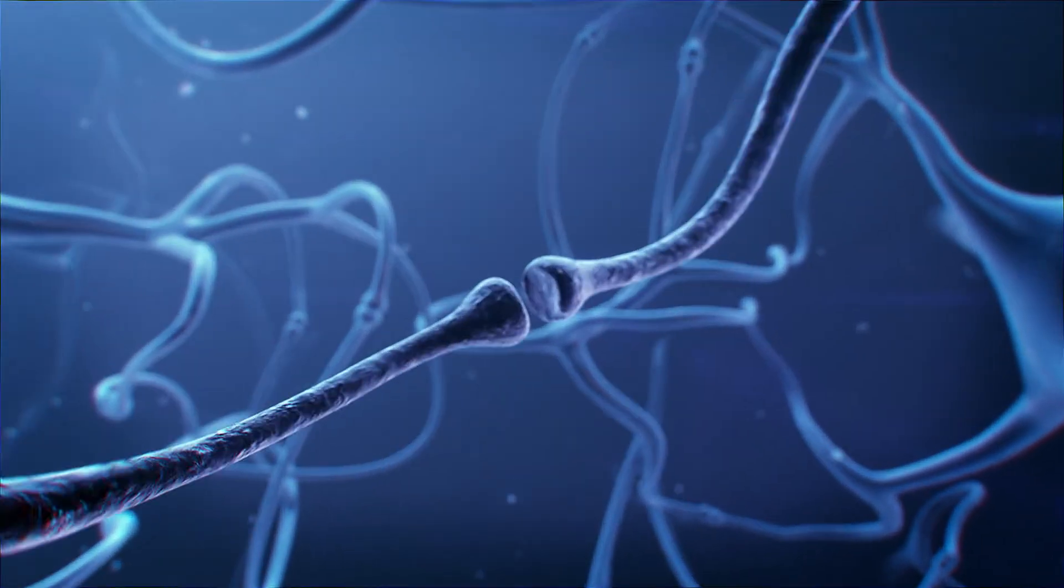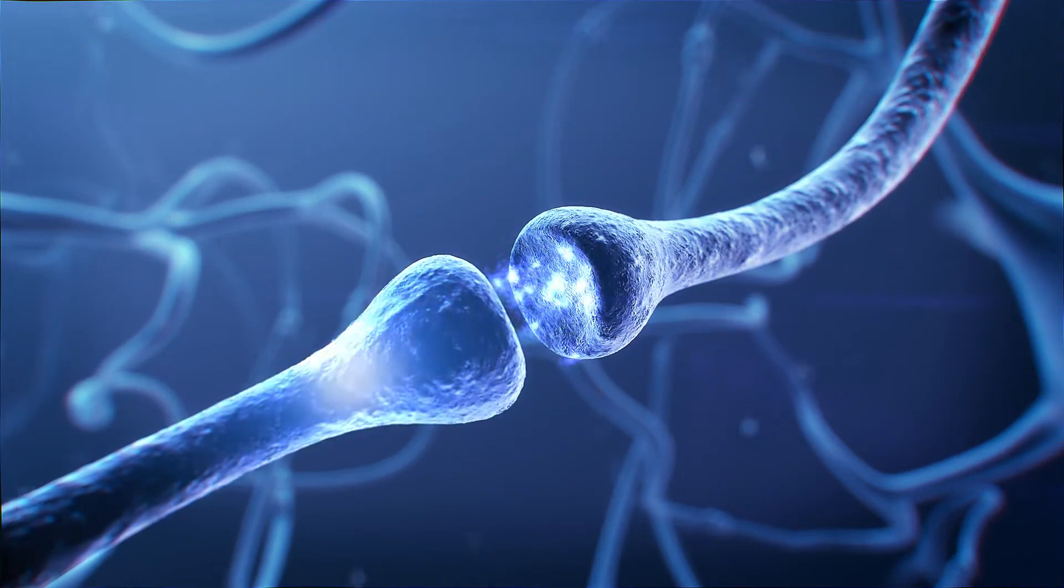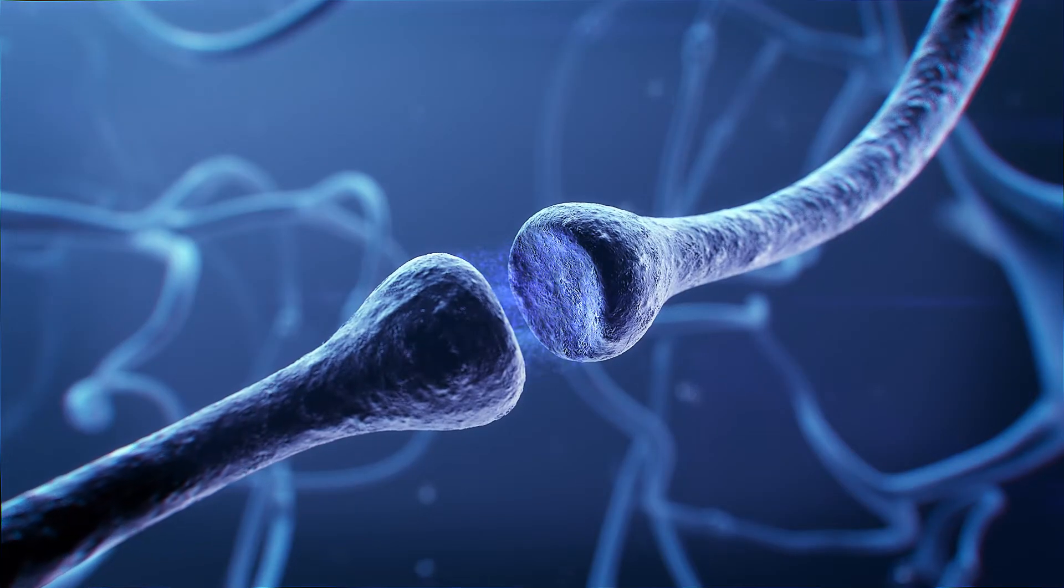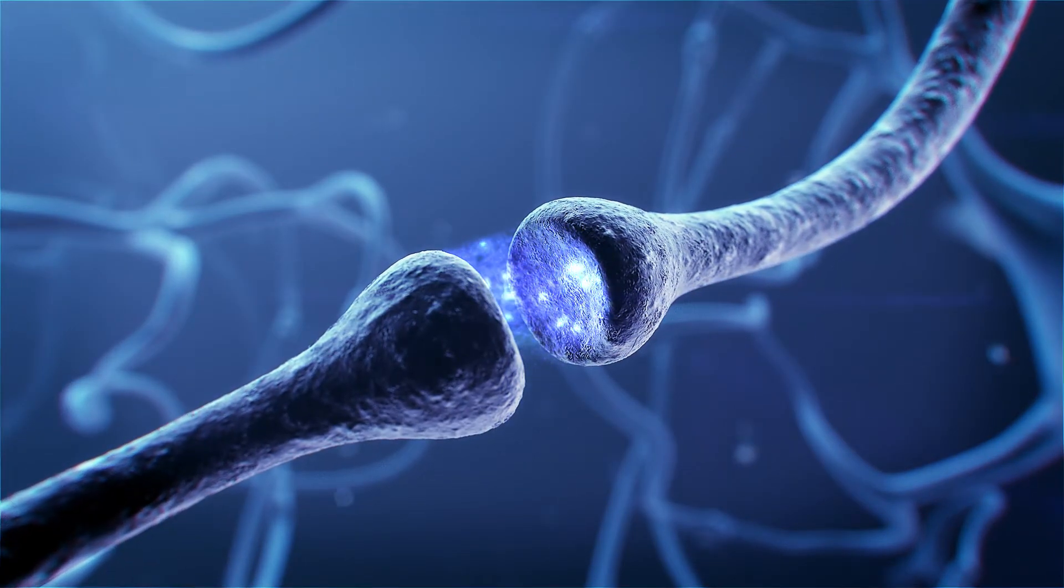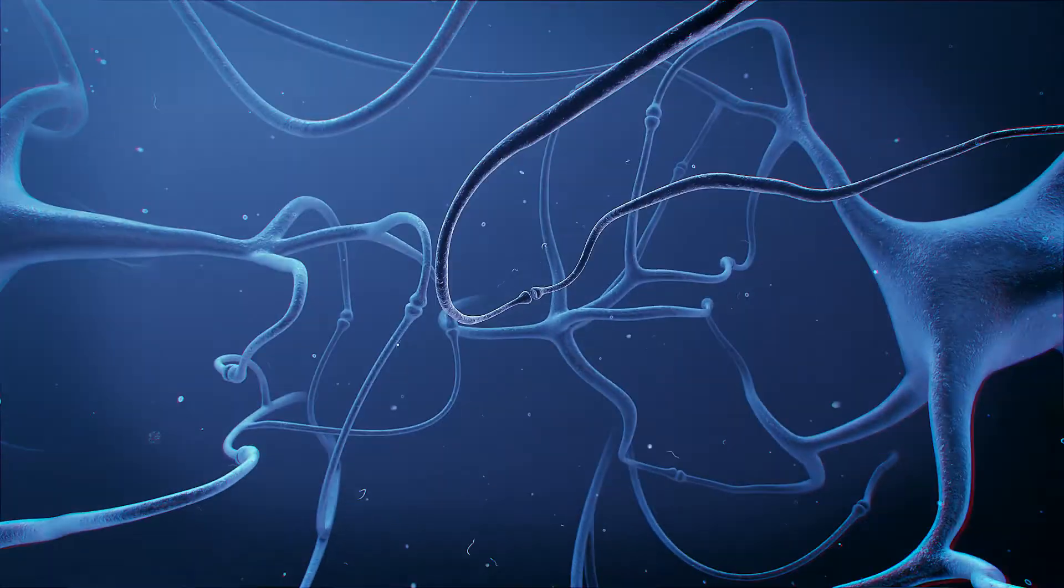A nerve cell fires when an electrical impulse travels along its length. It communicates with other nerve cells by releasing neurotransmitters, which creates an electrical impulse in other cells.